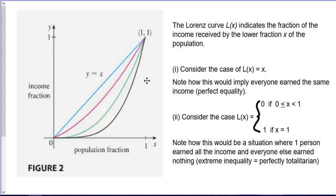One extreme case is the Lorenz curve L of x equal to exactly x. This would imply everyone earned the same income because you have a situation where the bottom 1% of the population earned exactly 1% of the income, and the bottom 10% earned 10% of the income, and the bottom 50% earned exactly 50%. If it was precisely that one-to-one correspondence, income to a fraction of population to a fraction of the income, that would mean everybody earned the same.